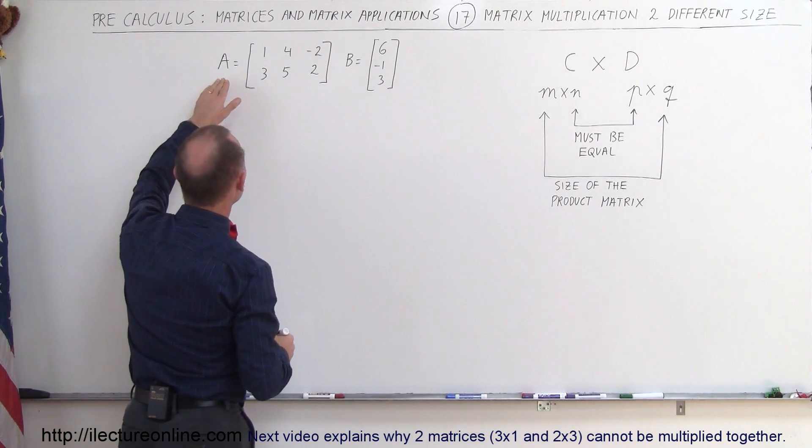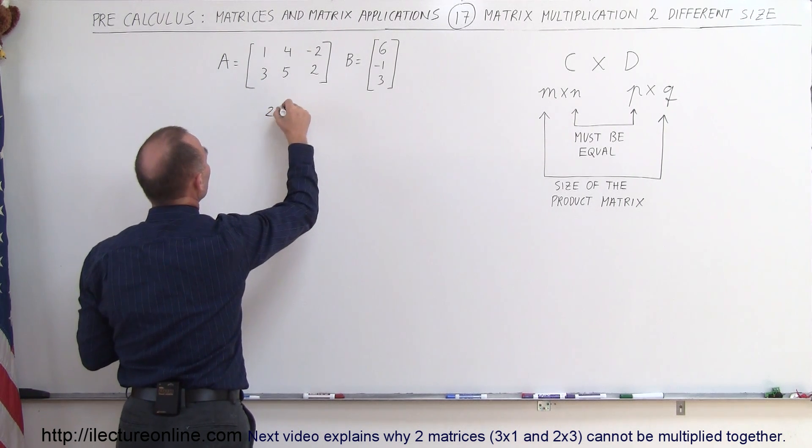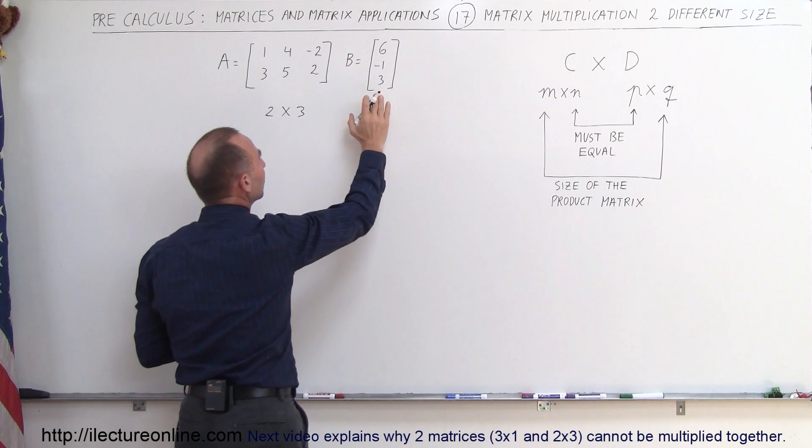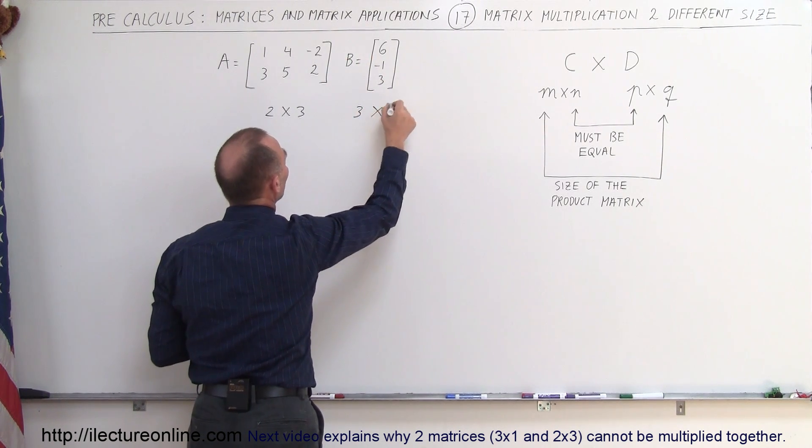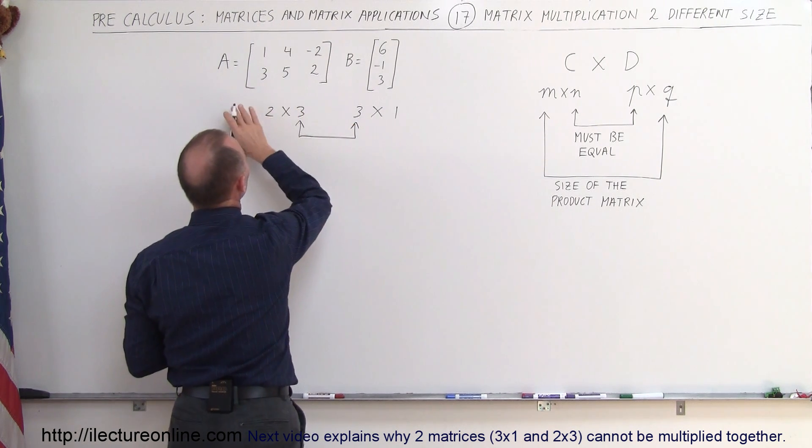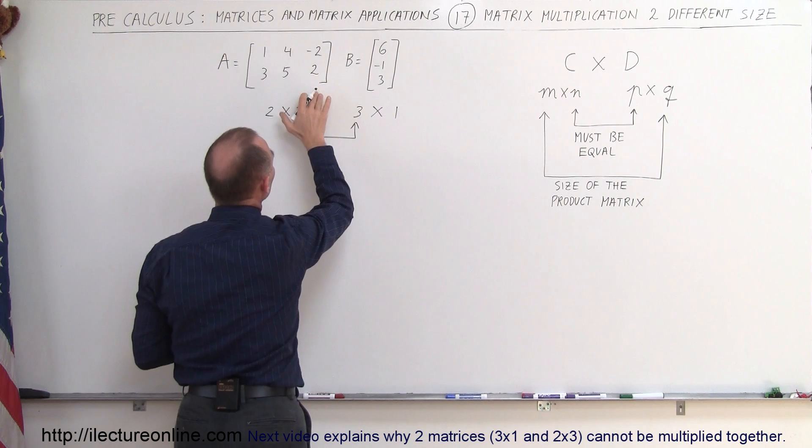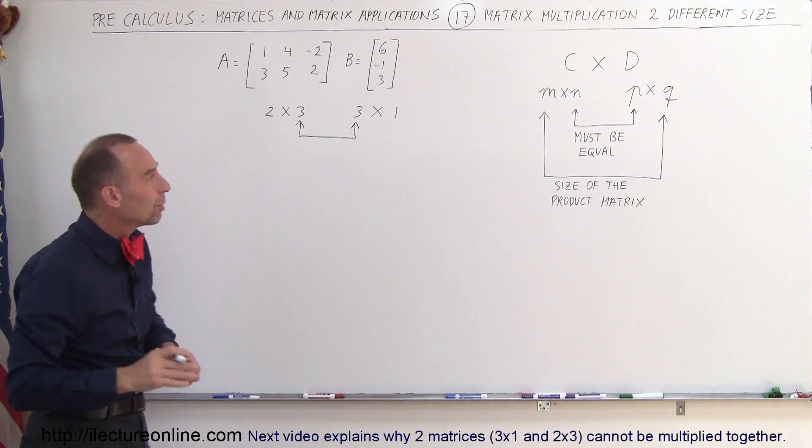Well, the dimensions of matrix A is two rows by three columns, so this is a two by three matrix. And the dimensions of matrix B is three rows and one column, so this is a three by one matrix. And you can see that, yes indeed, the number of columns of the first matrix equals the number of rows of the second matrix, so therefore we can multiply them together.